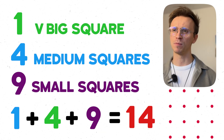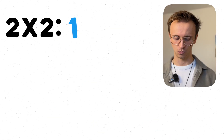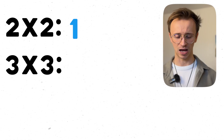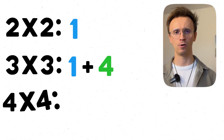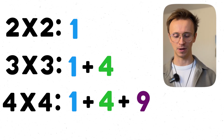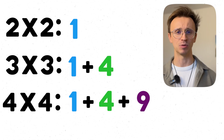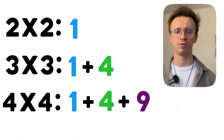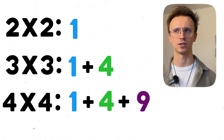I'm starting to see a pattern here. For the two by two I had one; for the three by three I had one plus four; for the four by four I had one plus four plus nine. I'm essentially adding all the perfect squares together. I'm going to hedge my bets and say that for a five by five we have four squared plus three squared plus two squared plus one squared.